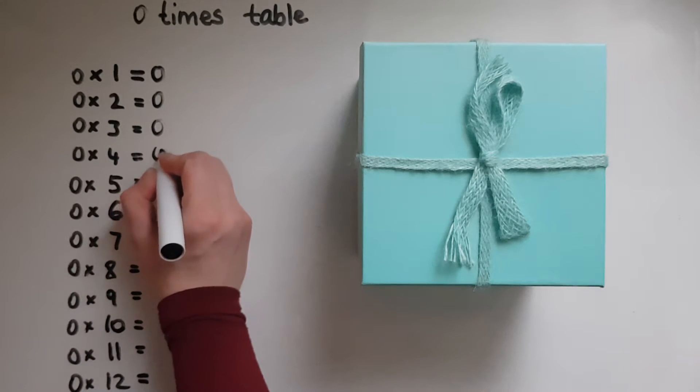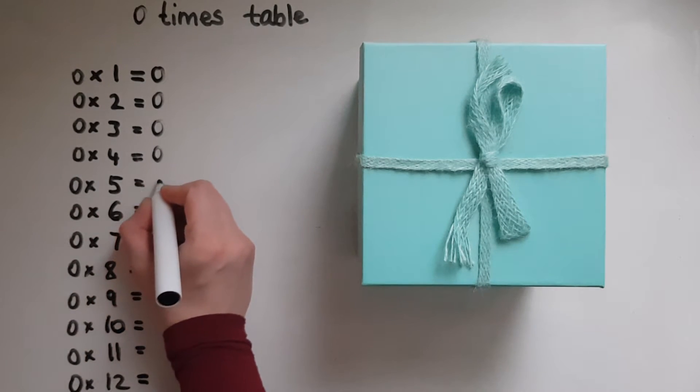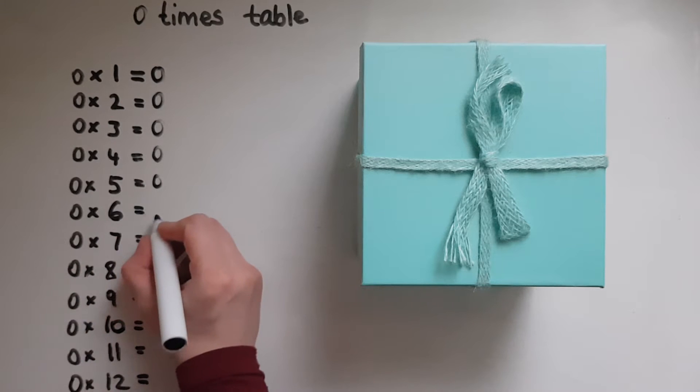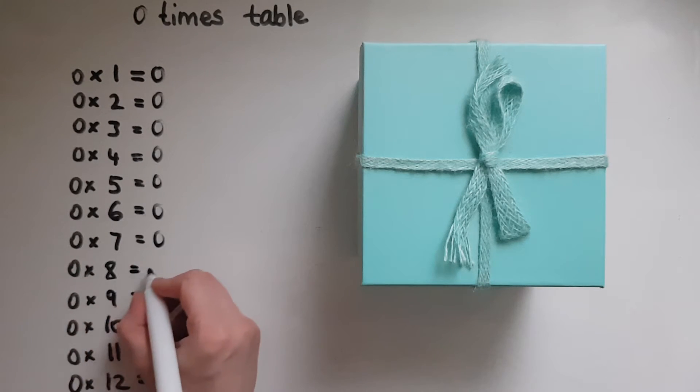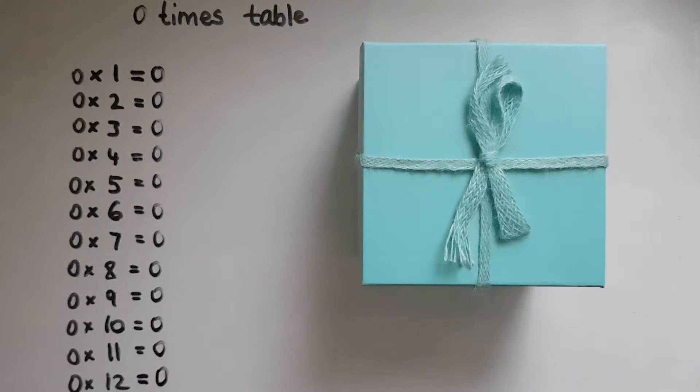Same thing. Zero times four is zero. Zero times five is zero. Zero times six is zero. Zero times seven is zero. Zero times eight is zero. Zero times nine is zero. Zero times ten equals zero. Zero times eleven equals zero. Zero times twelve equals zero.